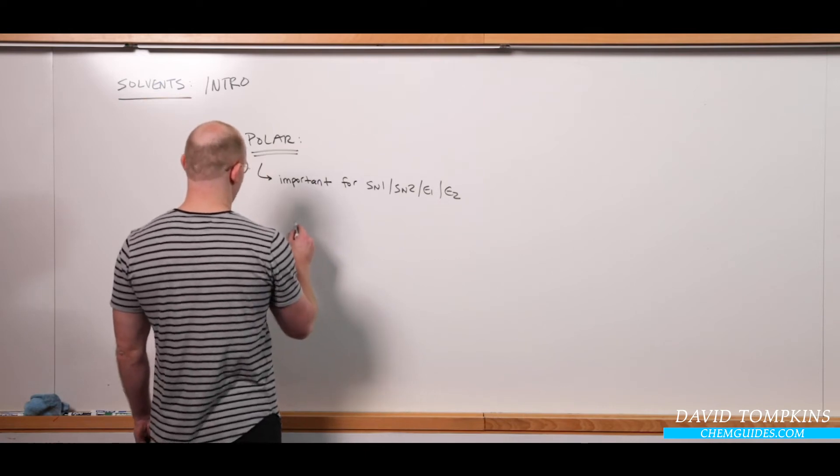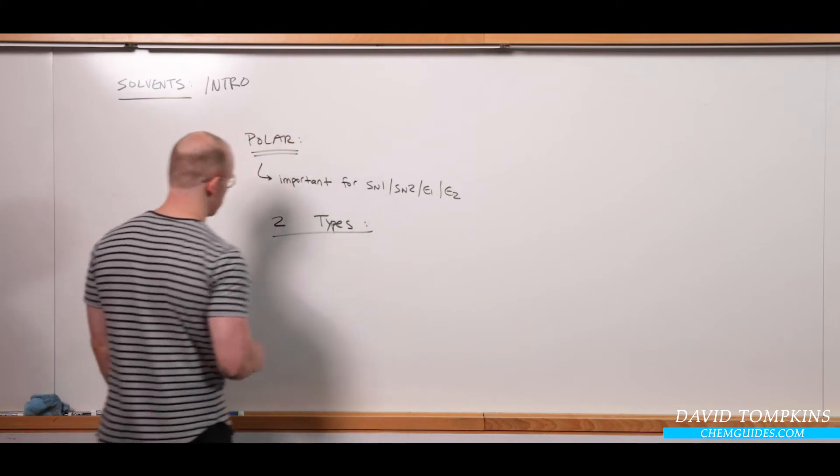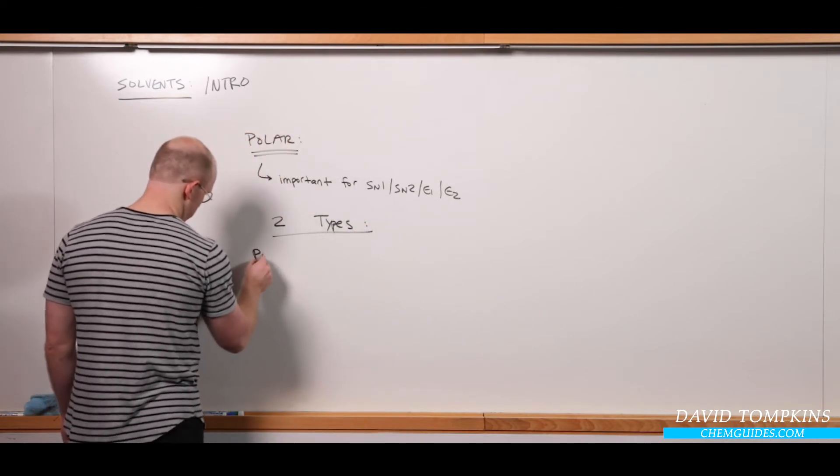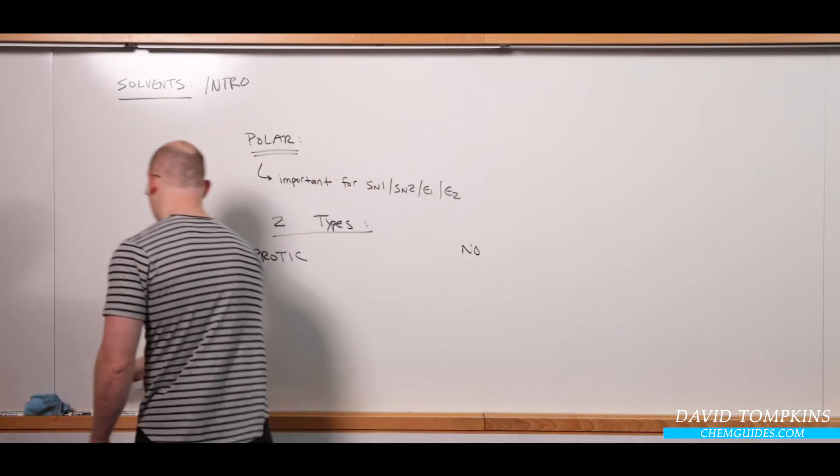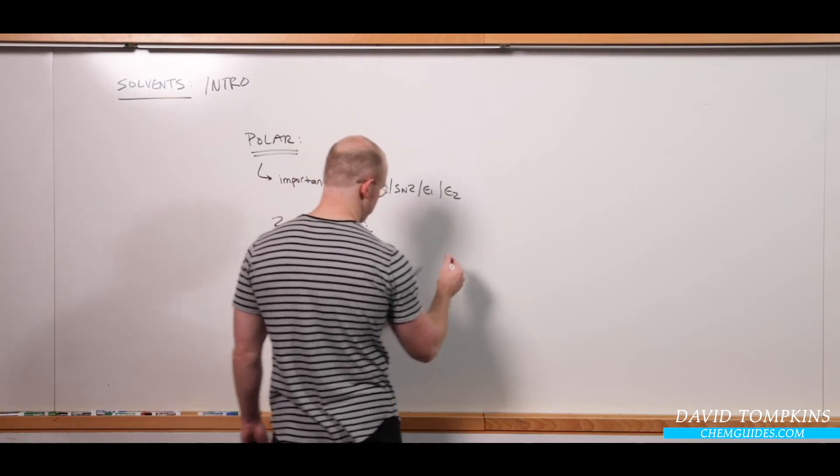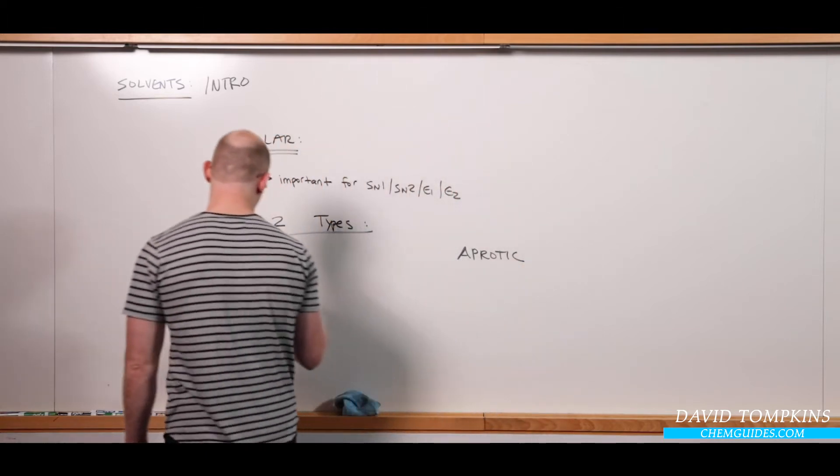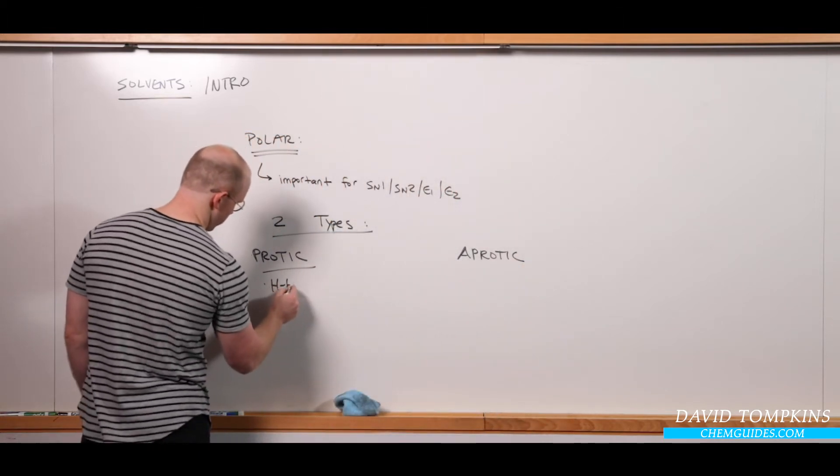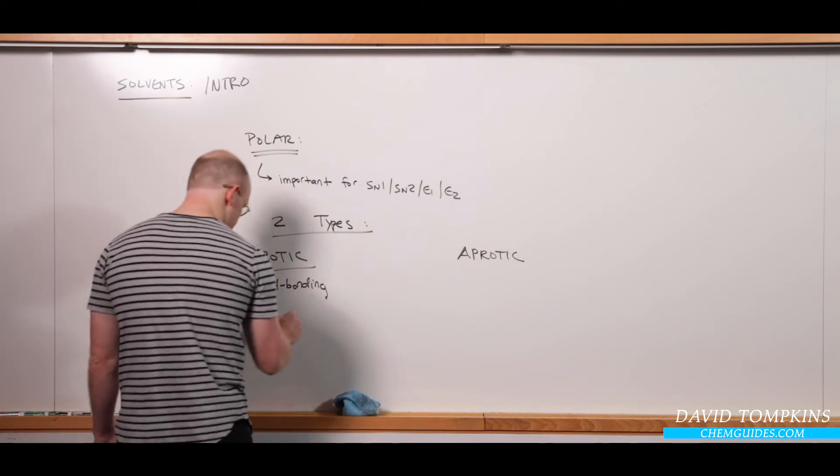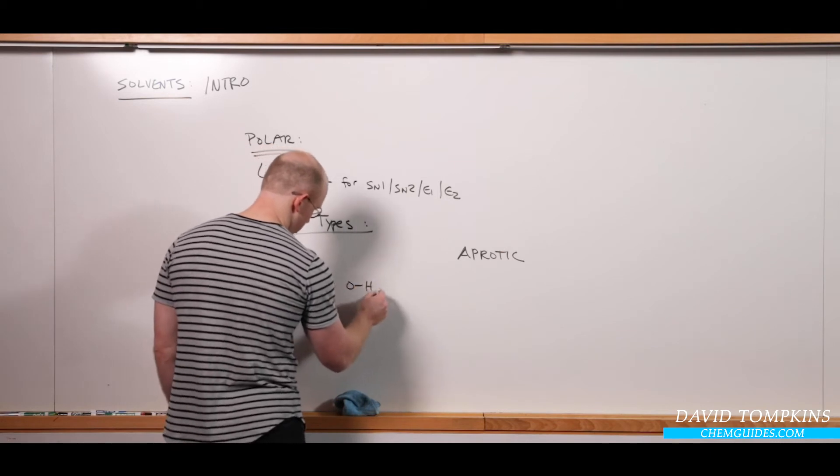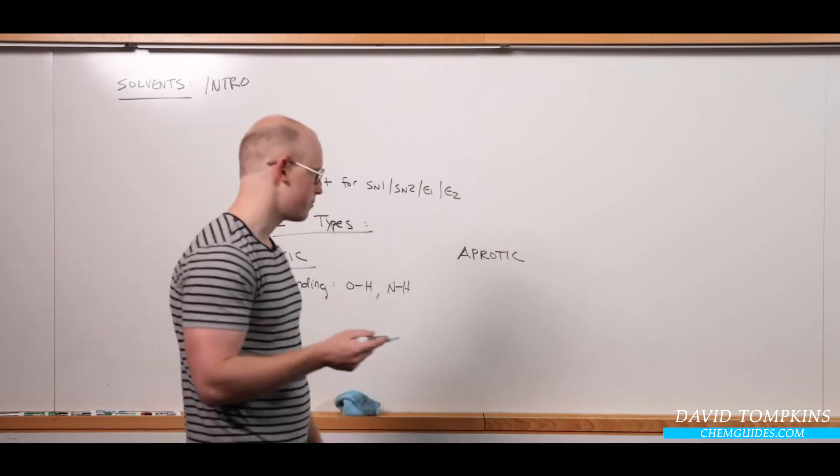So there are two subtypes of polar solvents. First, those that are protic and those that are aprotic. Protic solvents are unique and they have the ability to hydrogen bond. Or they have key functional groups like OH, usually, sometimes NH bonds, alcohols, carboxylic acids, and amines.